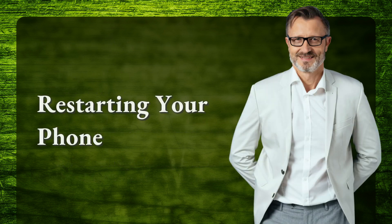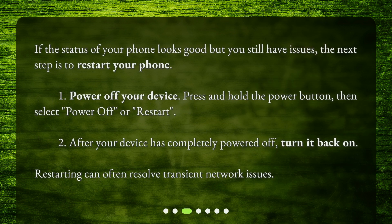If the status of your phone looks good but you still have issues, the next step is to restart your phone. Press and hold the power button, then select power off or restart. After your device has completely powered off, turn it back on. Restarting can often resolve transient network issues.